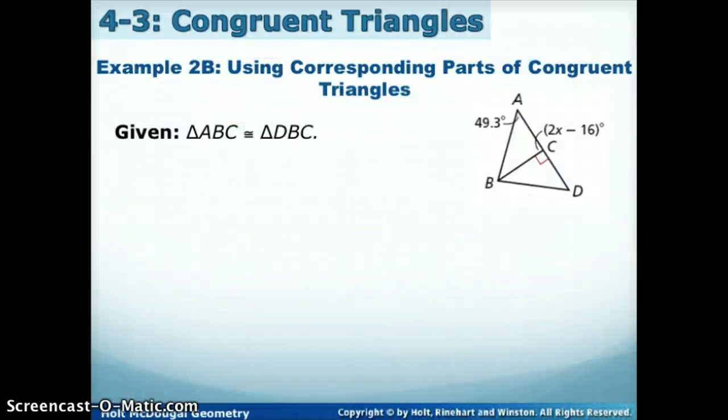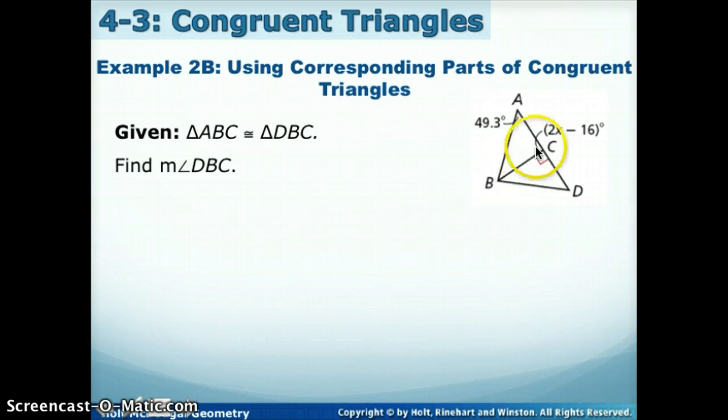Now we're going to look at another example, same picture, but this time we are going to find the measure of DBC, so this angle up here. Well, if I look in the picture, I see that I know most of the measures on this side of the triangle. We knew that this one was a right angle, and that one's 49.3. Well, if I need DBC, which in this triangle is angle B, if I can find angle B from the other triangle, we learned that those are in matching positions, so they're going to be the same.